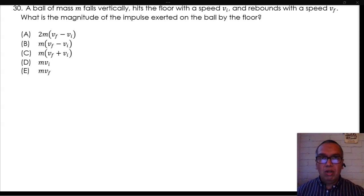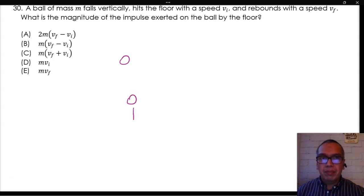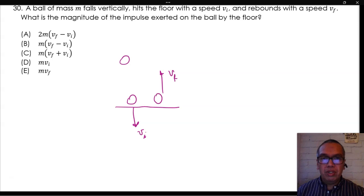A ball of mass M falls vertically, hits the floor with a speed VI, and rebounds with a speed VF. What is the magnitude of the impulse exerted on the ball by the floor?